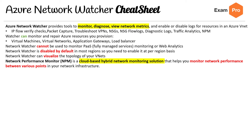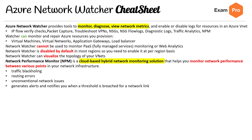Network Performance Monitor (NPM) is a cloud-based hybrid networking monitoring solution that enables you to monitor network performance between various points in your network infrastructure. It covers traffic blackholing, routing errors, unconventional network issues, and will generate alerts and notify you when a threshold is breached for a network link. There's a lot in the service — it's hard to say if you need to know all of it for the exam.